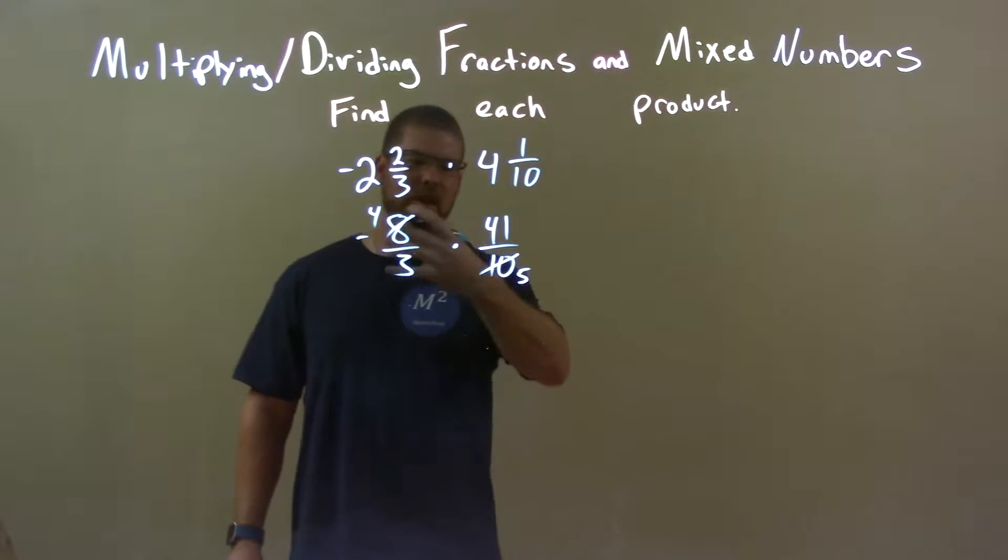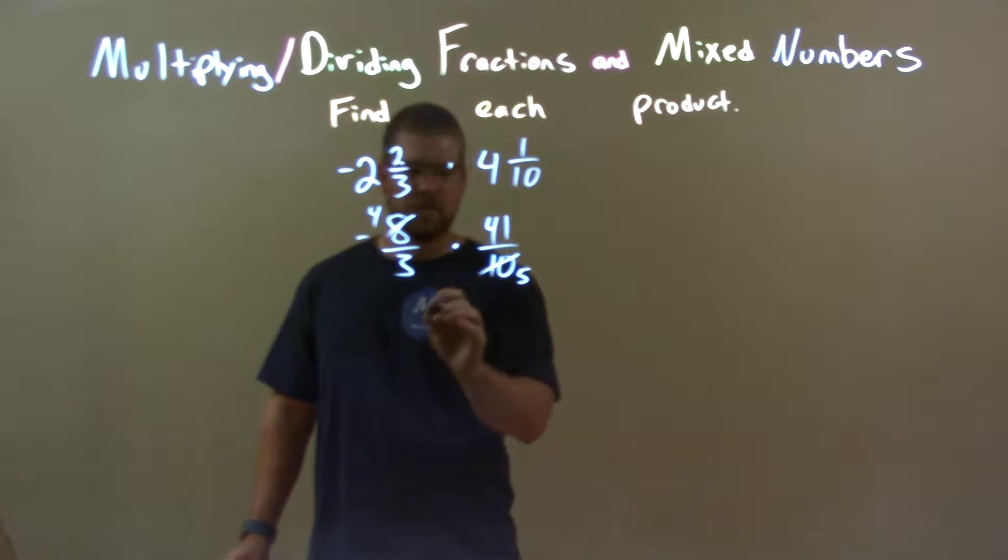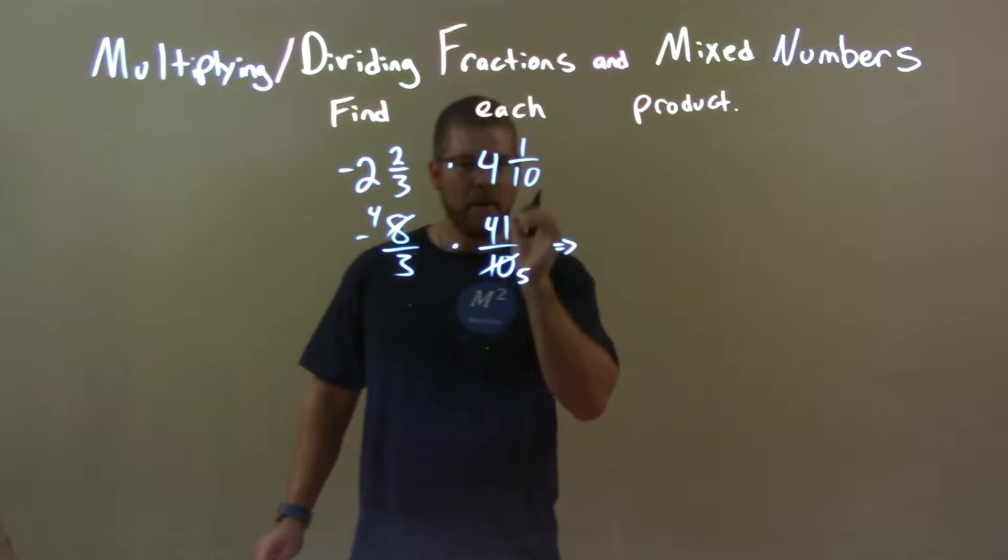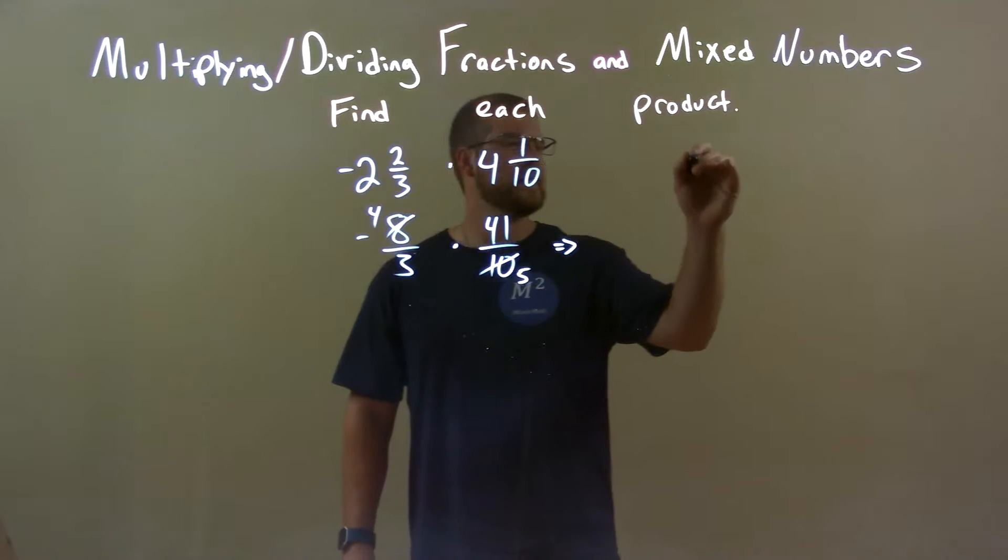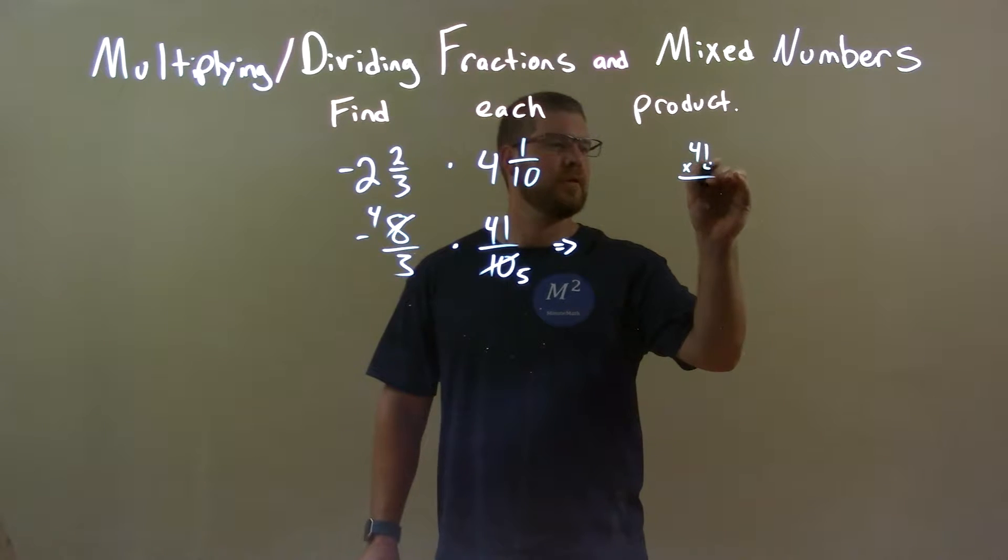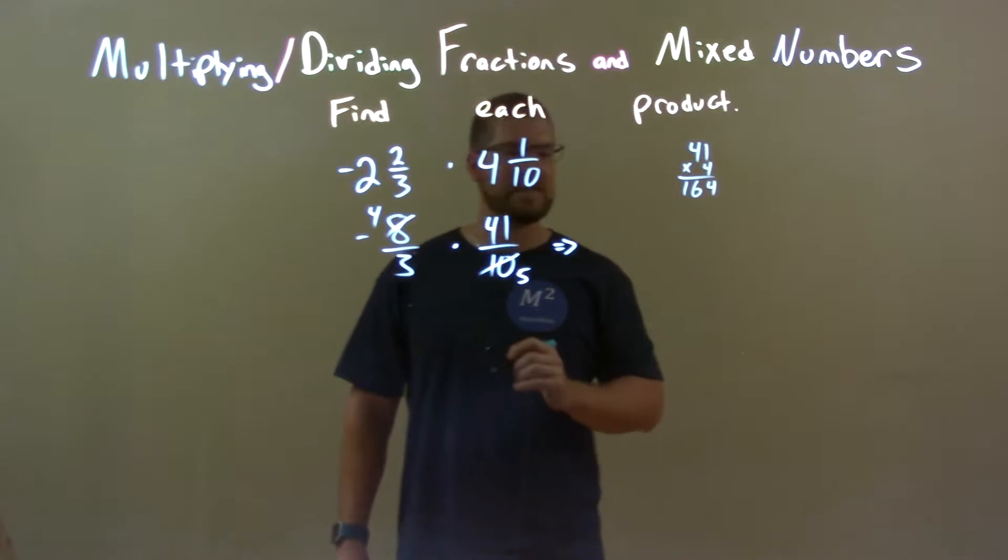So just like we always do, multiply across the numerator. 4 times 41, well, 41 times 4: 1 times 4 is 4, and 4 times 4 is 16. So we have 164 here.